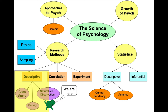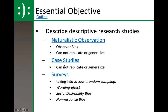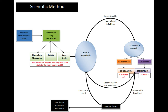If we kind of break down the science of psychology, we've already talked about the approaches and the growth. Now we're looking at research methods and statistics. If you're familiar with the scientific method from your bio, chem, or anatomy classes, you're going to have a fairly easy time working through this.